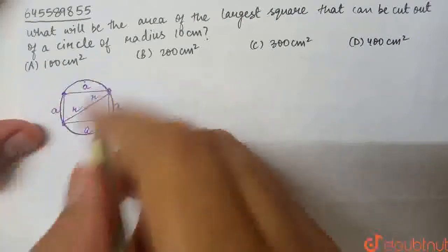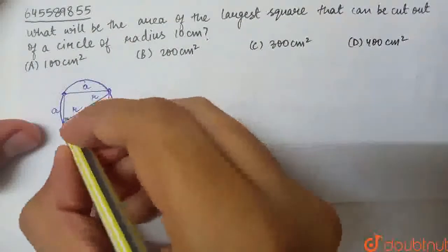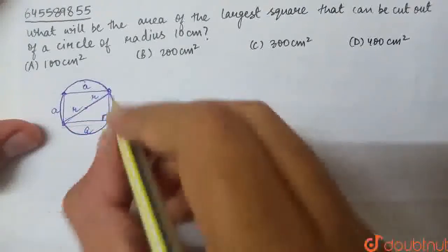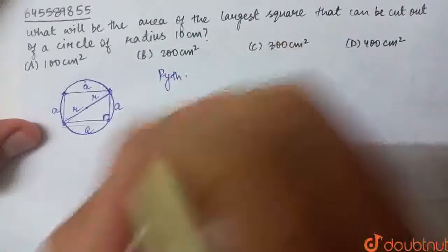Now, we need to find A. This will be the right angle because it's a square. So, here we have this side, this side and this side. There are three sides and we have a right angle triangle. So, we use Pythagoras theorem.